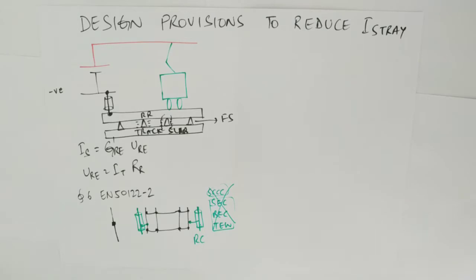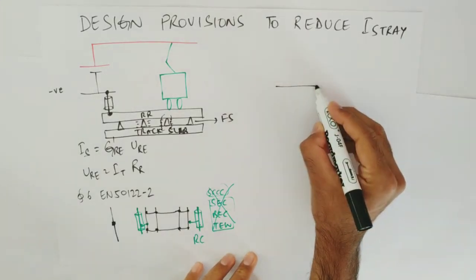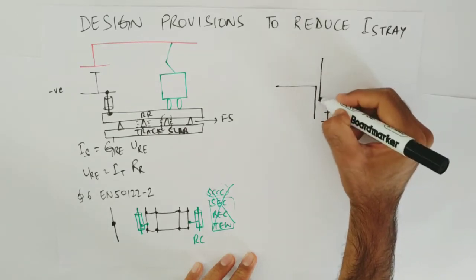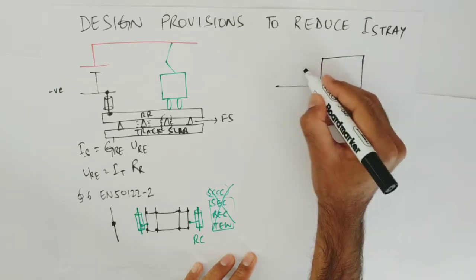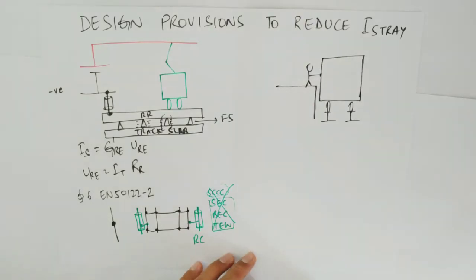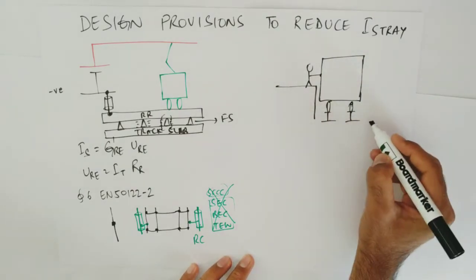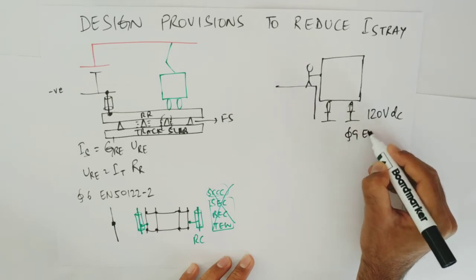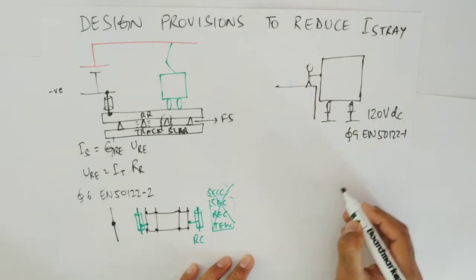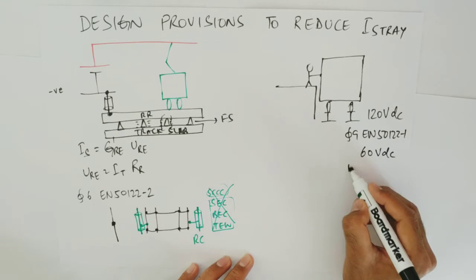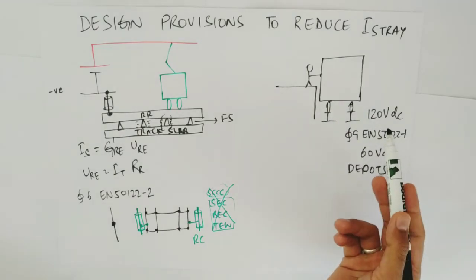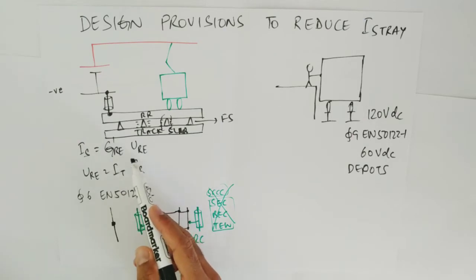However, this has a problem. Suppose we have a station with a platform and running rails, and a person is standing and touching the train. By touching the train he is exposed to the running rail potential. If the running rail potential is above the limit of 120 volts DC — given in clause 9 of EN 50122-1 (60 volts DC for depots) — the person can be electrocuted. The rail potential can increase when current is higher or when resistance increases, such as in an N-1 case.